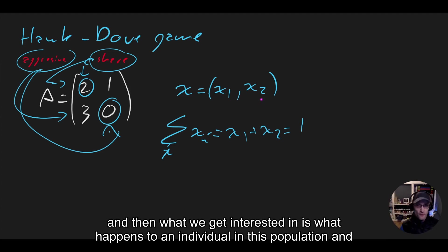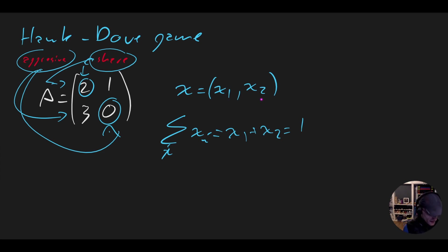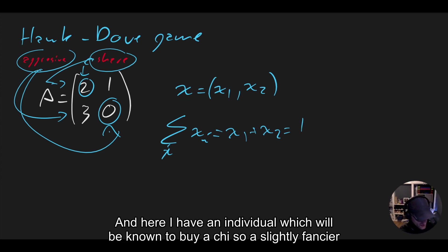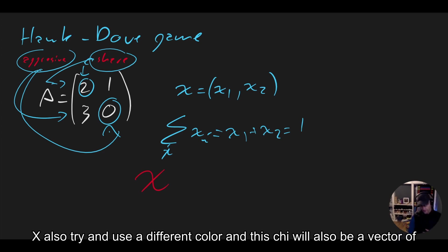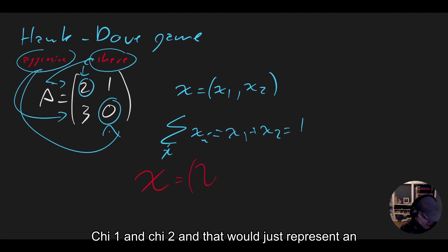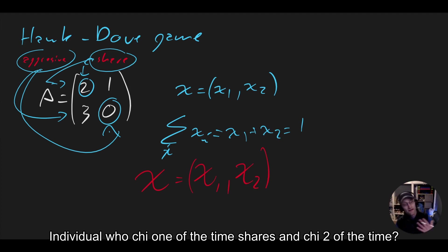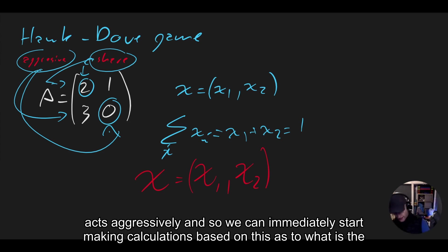And then what we get interested in is what happens to an individual in this population. And this here is an x, and here I have an individual, which will be denoted by a chi, so a slightly fancier x. I'll also try and use a different color. And this chi will also be a vector of chi1 and chi2. And that will just represent an individual who chi1 of the time shares and chi2 of the time acts aggressively.